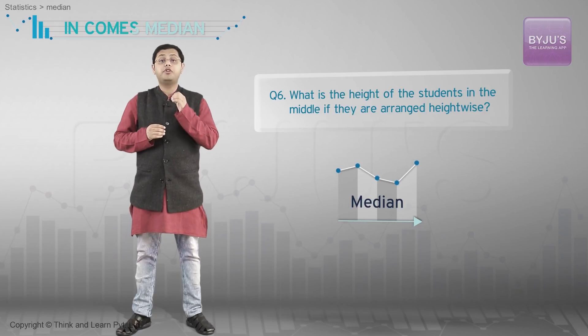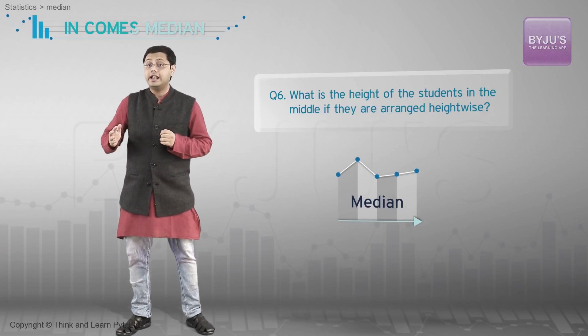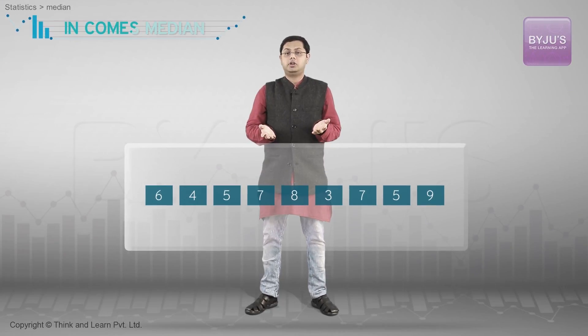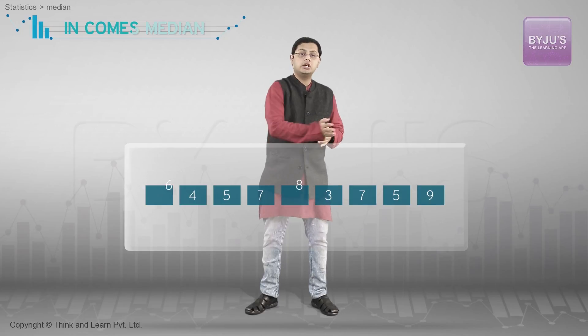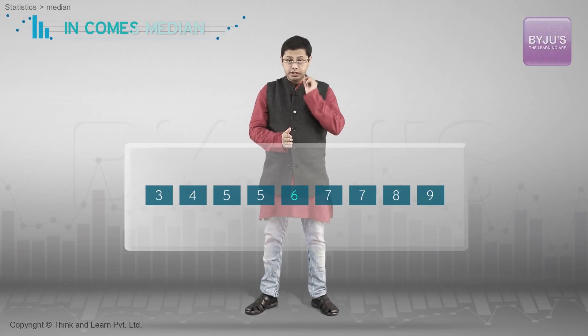Whenever the median is mentioned, your first instinct should be to arrange the data in either ascending or descending order. To find the median of a set of nine numbers, we first arrange it in ascending order and literally take the middle value, which happens to be six — the fifth term — because there are four terms to the right of six and four terms to the left of six.